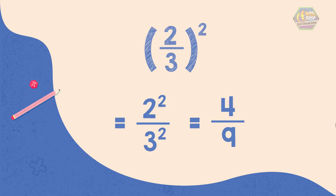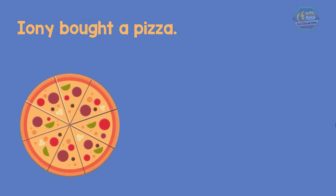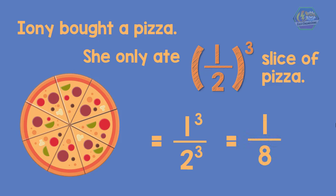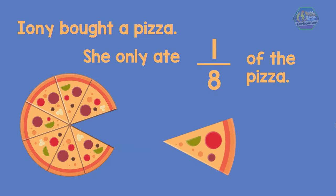Another example: Ayuni bought a pizza. She only eats 1 half raised to the power of 3 slices of pizza. How many slices did Ayuni eat? Applying Law 4, 1 half raised to the power of 3 will become 1 raised to the power of 3 divided by 2 raised to the power of 3. Therefore, the equation will become 1 over 8. So Ayuni only ate 1 eighth of the pizza.